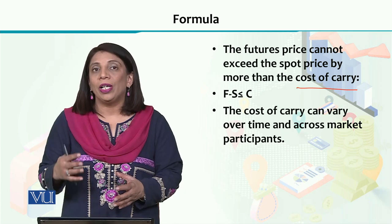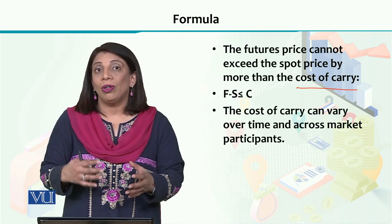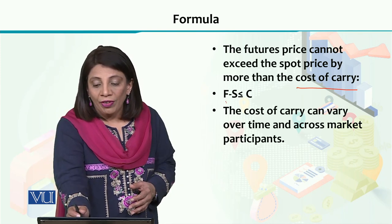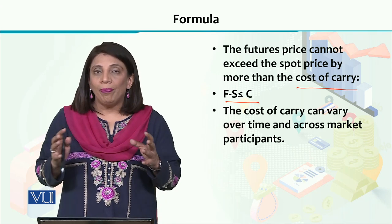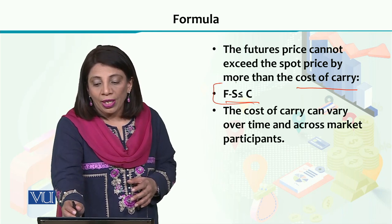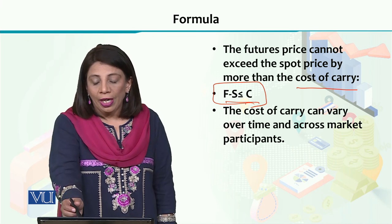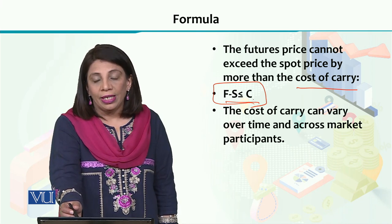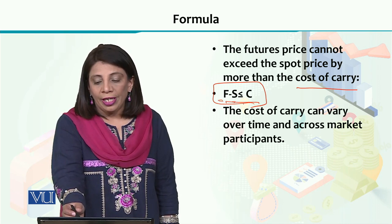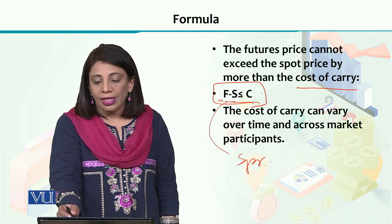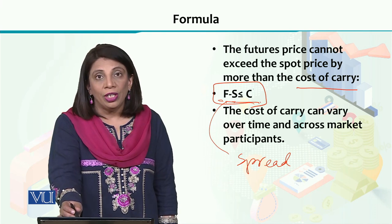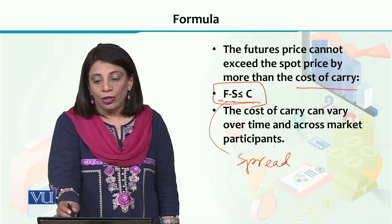The difference between the future price and the spot price is called the spread. When we are trying to build up and understand the relationship between the future price and the spot price, we need to understand this particular weak inequality. We put a sign here: F minus S less than or equal to C, which means the spread — the difference between the future price and the spot price — should be smaller than or equal to your cost of carry.